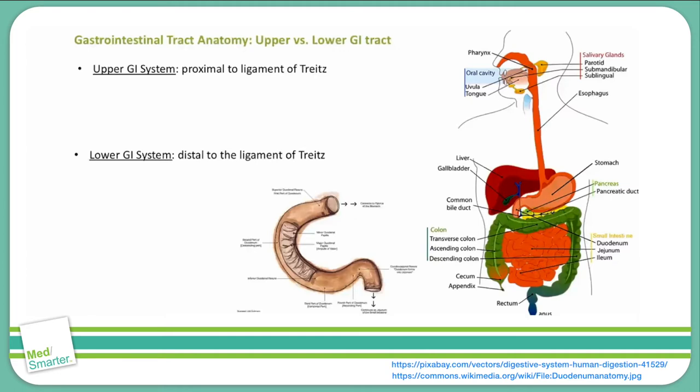Before discussing the individual organs of the GI tract, we have to make a distinction between the upper GI tract and the lower GI tract. The landmark that divides the upper from the lower GI tract is the ligament of Treitz.